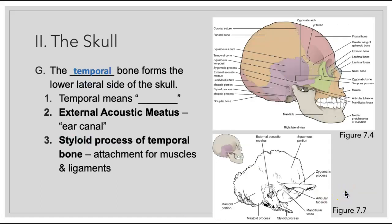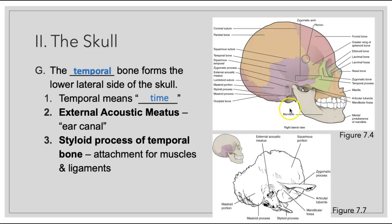For our temporal bone, as we said, we can see this on the lateral aspect of the skull, and the word tempus means time. On the temporal bone, we have many unique features. The external acoustic meatus — meatus means canal — is our ear canal, which some of you may use a Q-tip to clean. And then we have our styloid process, which is sticking out like a stylus or pen, and that is there for attachment of muscles and ligaments.